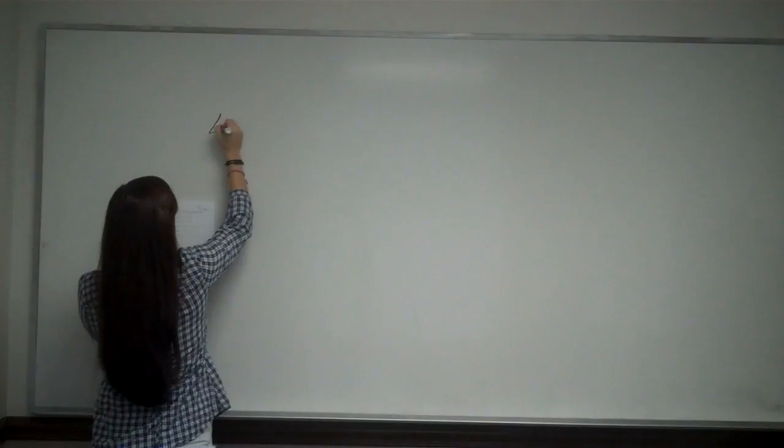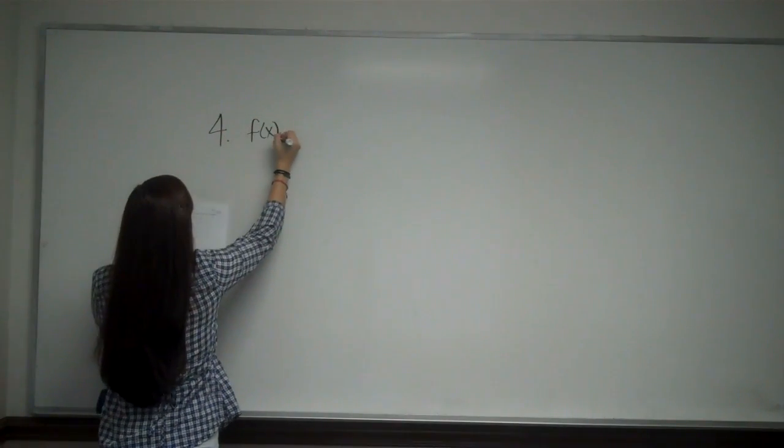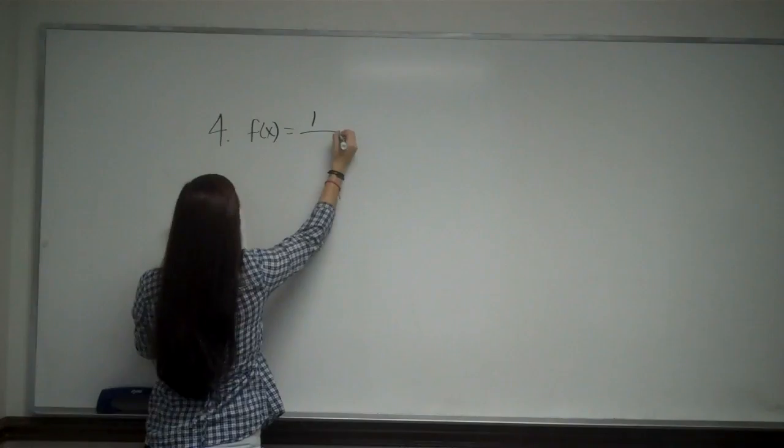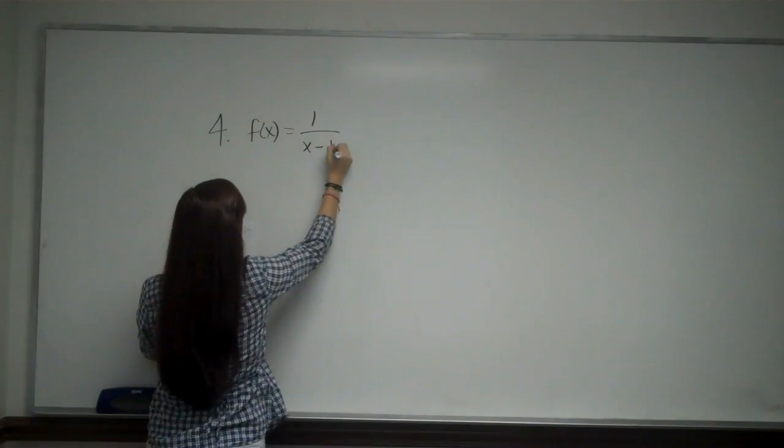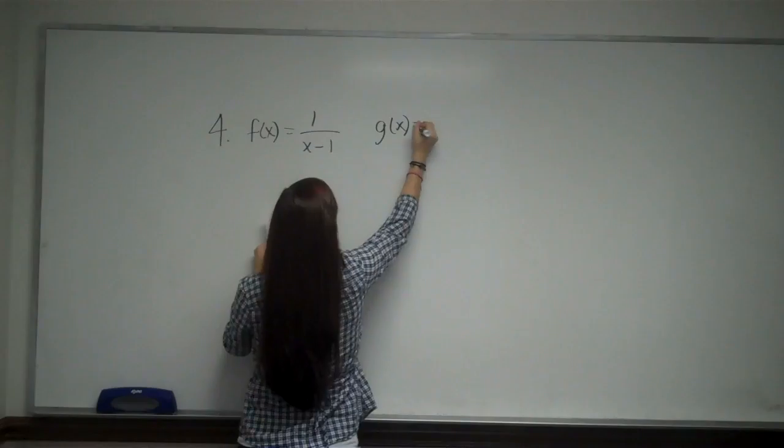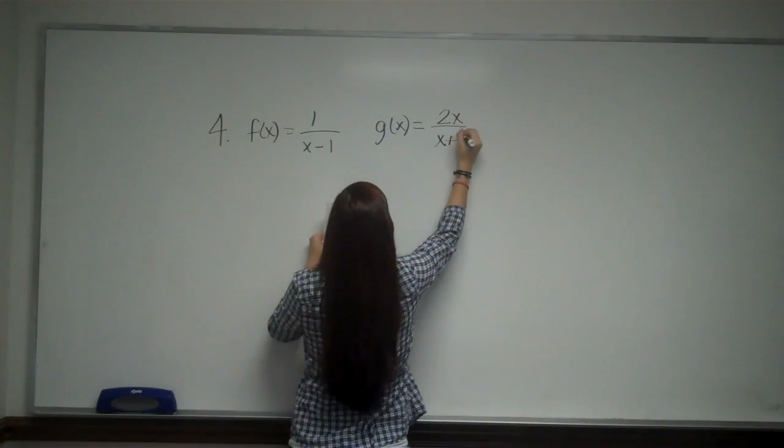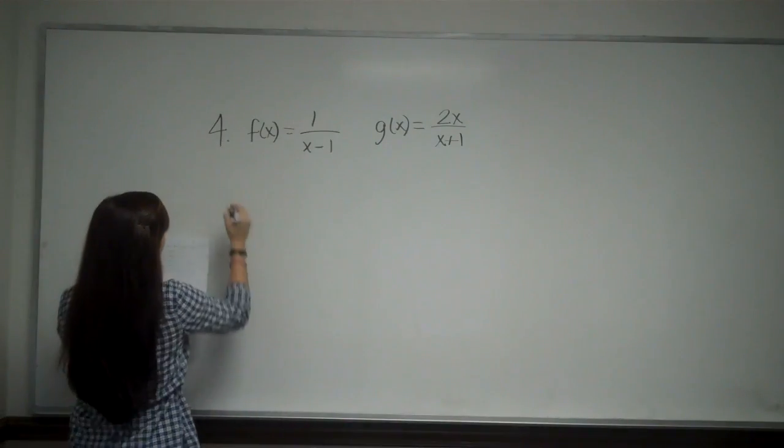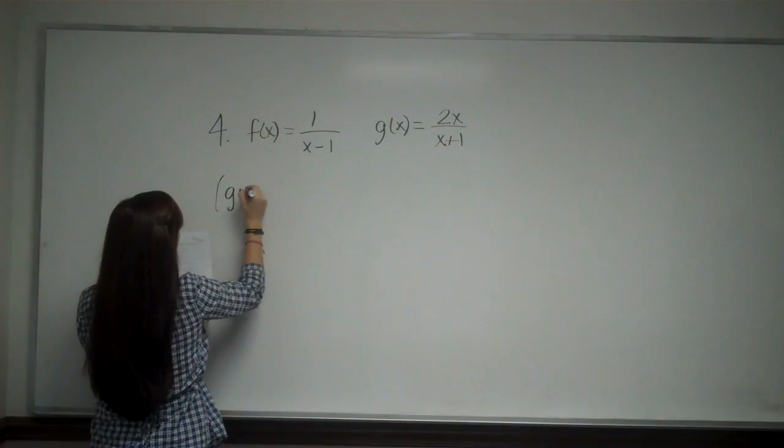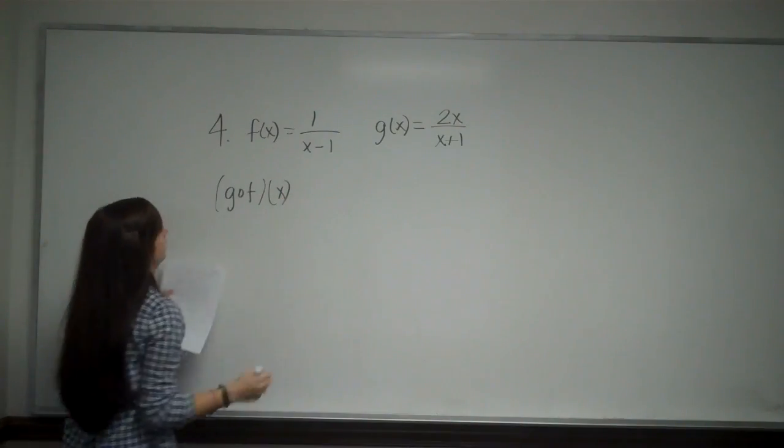Problem number 4 states: let f of x equal 1 over x minus 1, and let g of x equal 2x over x plus 1. Now, they want us to find g of f of x and its domain.